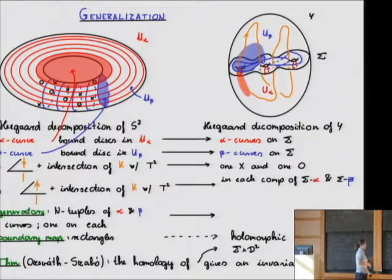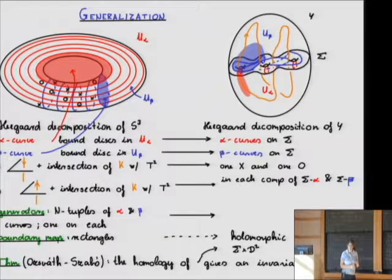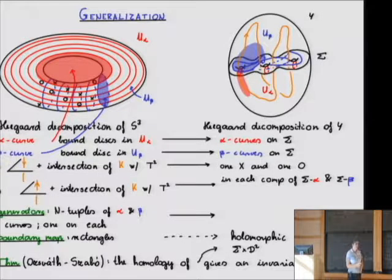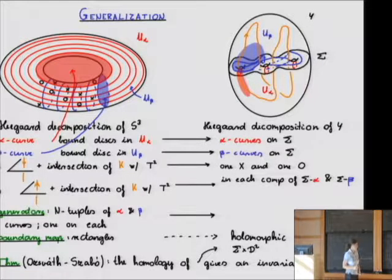The X's are positive intersections of the knot with the Heegaard surface, and the O's are negative intersections of the knot with the Heegaard surface. The generators are again n-tuples of intersections of the red and blue curves with one on each. The boundary map, which used to count rectangles, now counts holomorphic curves with specified boundary conditions in a surface cross disc, of course with a given complex structure.